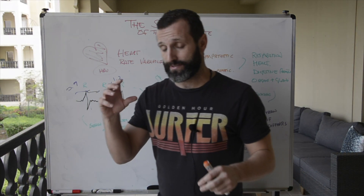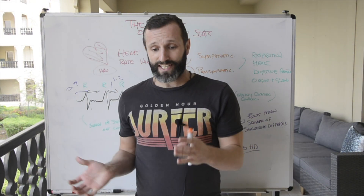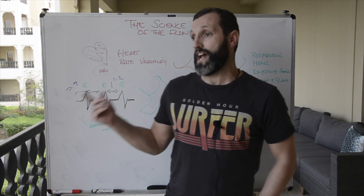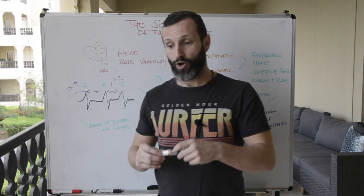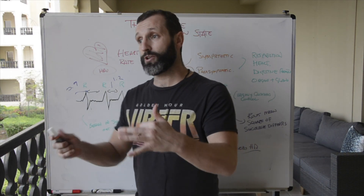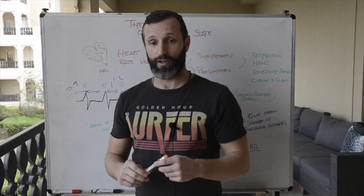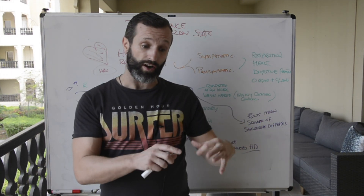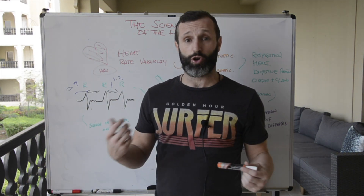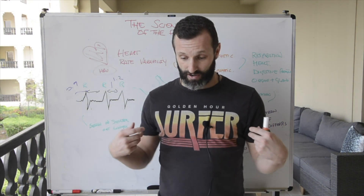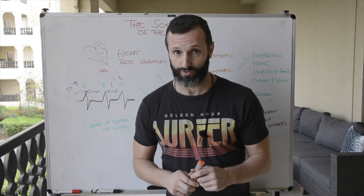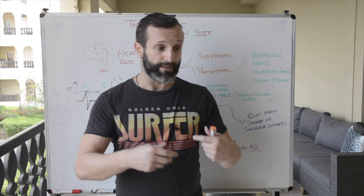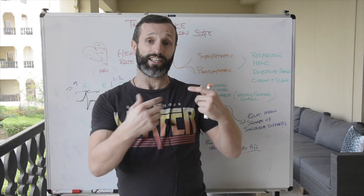Heart rate variability and the way that we measure it is important for us because we want to get a sense of priming ourselves to be in the flow state. We can't really measure day to day in the moment what actually happens with heart rate variability, only because the technology hasn't caught up with it yet. We can only measure heart rate variability ideally in the morning, the moment we've woken up. Once we've taken that reading, we can adapt our data accordingly to what our body and mind are asking us to do to get ourselves triggered into the flow state. So heart rate variability is part of what happens in the flow state, but there is a coherence according to the activity that we're undertaking.